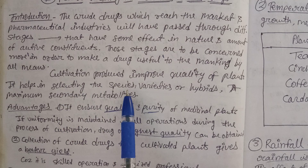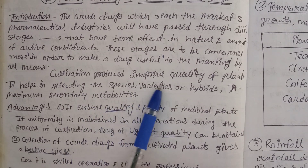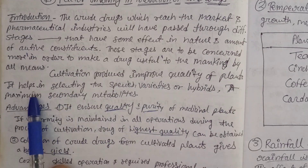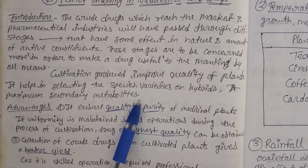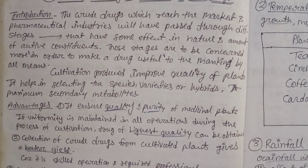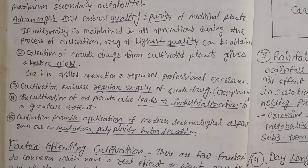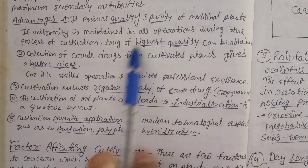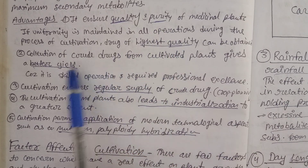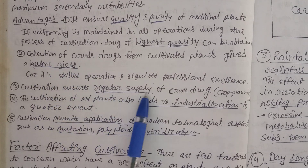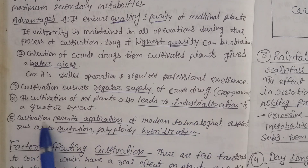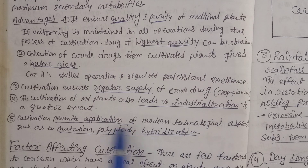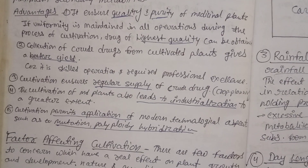There are advantages of cultivation: it produces improved quality of plants, it helps in selecting the species, variety, and hybrid, and maximum secondary metabolites can be achieved. We can ensure quality and purity, get the highest quality through cultivation, get better yield, and ensure regular supply to the industry. Cultivation also permits the application of modern technology like polyploidy, mutation, and hybridization.